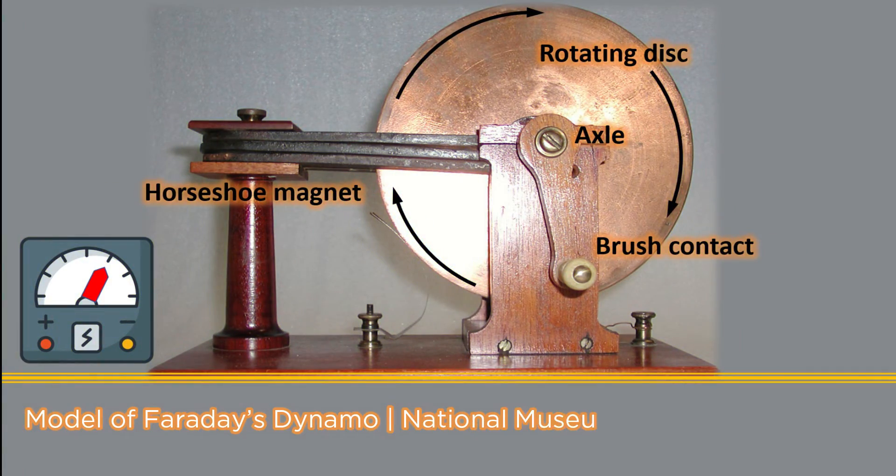Faraday's new setup consists of a conducting copper disc mounted on an axle. He set an edge of the disc between the poles of a powerful permanent horseshoe magnet. He then made electrical contacts by placing one brush contact on one edge of the disc and the other to the axle and connecting the two contacts to a galvanometer. When the disc rotates, the galvanometer needle moved but this time it stayed in its new position. A steady electrical current was being produced.